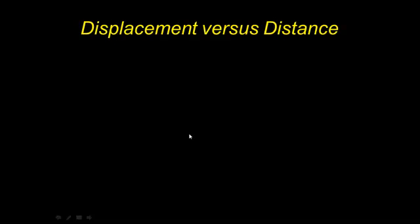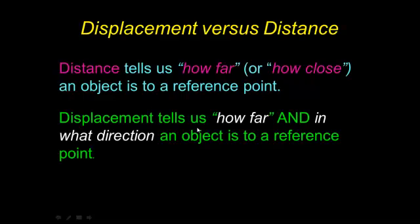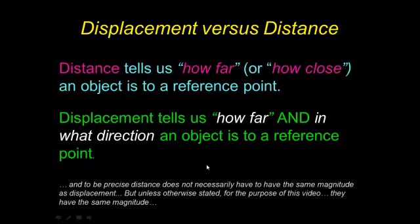The difference between displacement and distance is that distance always tells us how far or how close something is — for example, the distance you'd travel from your house to school. Displacement tells us how far and in what direction an object is relative to a reference point, such as 20 miles northwest. Displacement always has a sign: it can be positive or negative. For the purposes of this video, distance and displacement have the same magnitude.